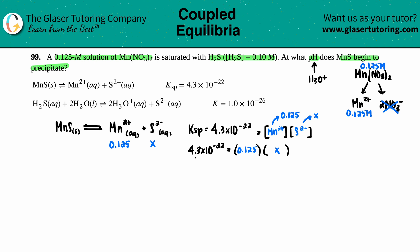And if we want to just solve for X, all we got to do is divide on both sides by 0.125. This cancels. And now we're just left with X.